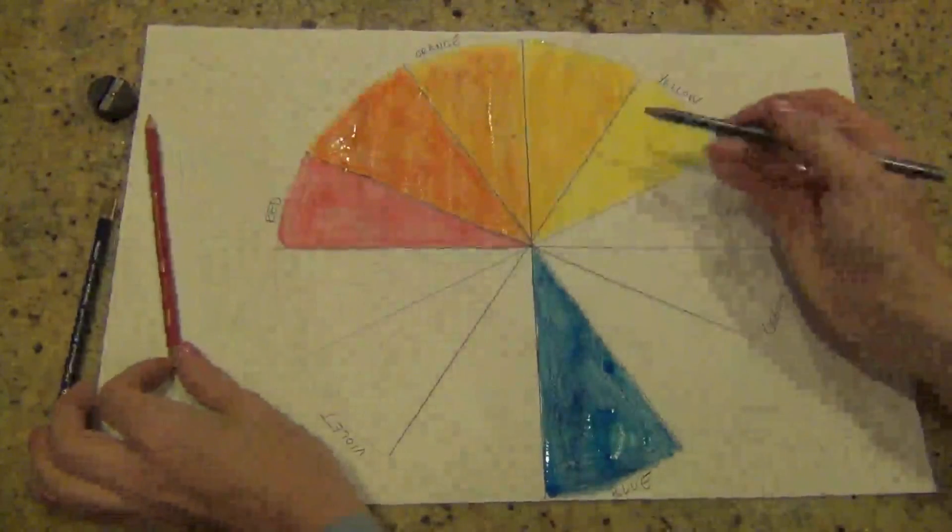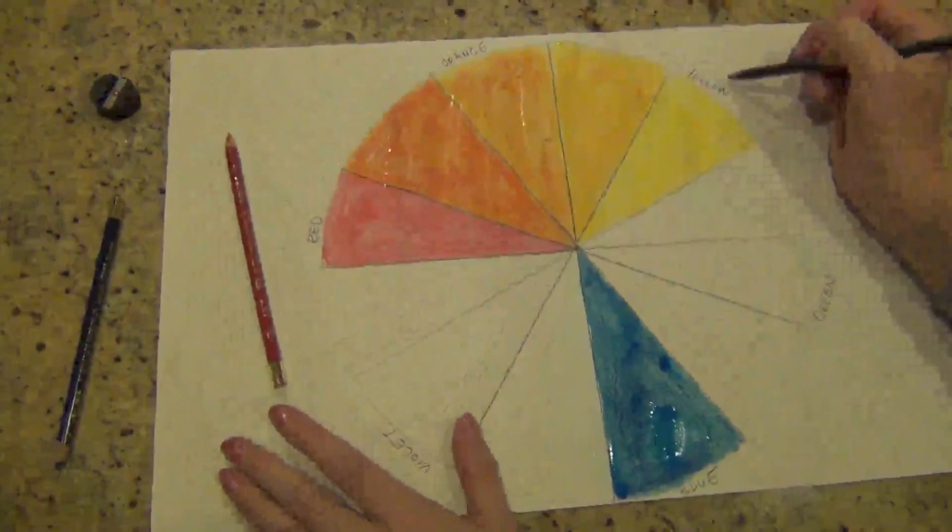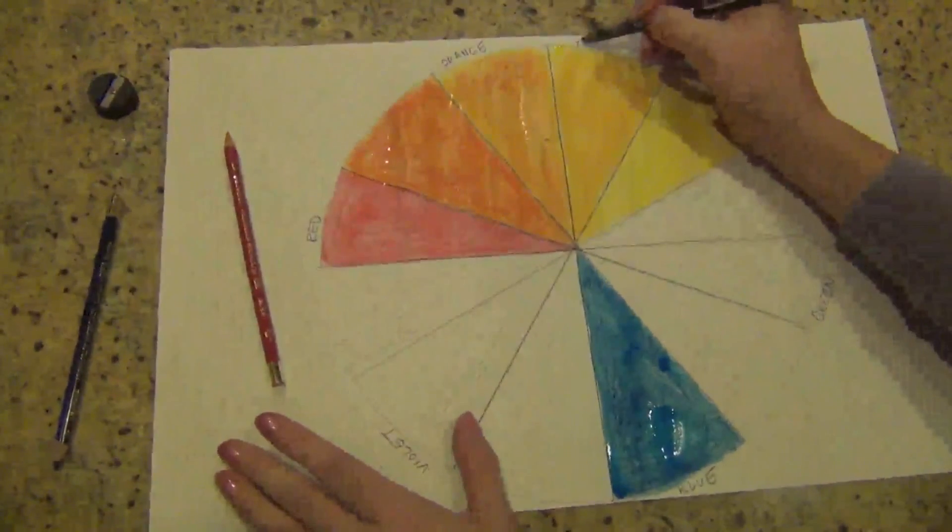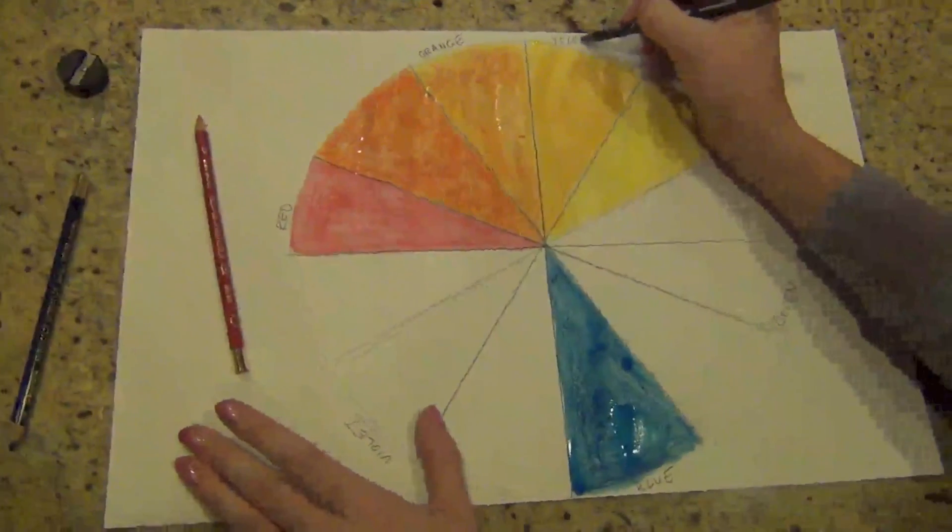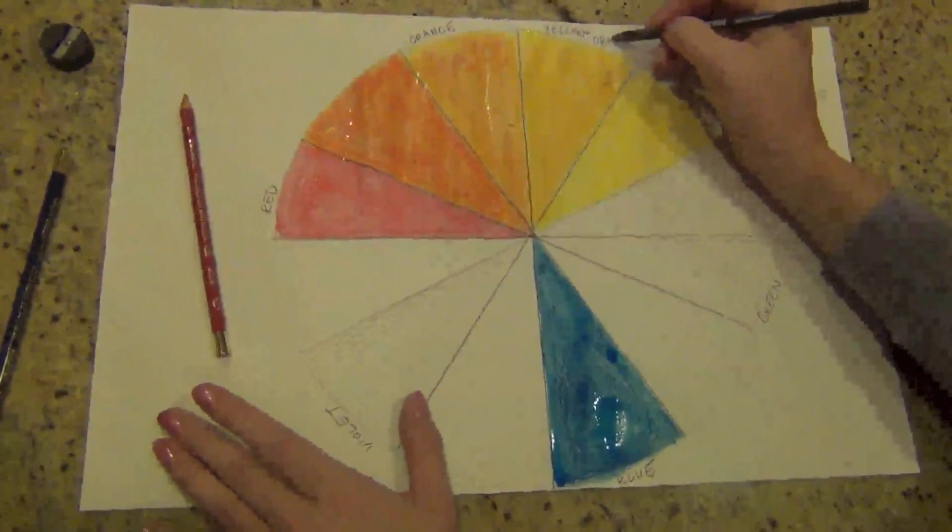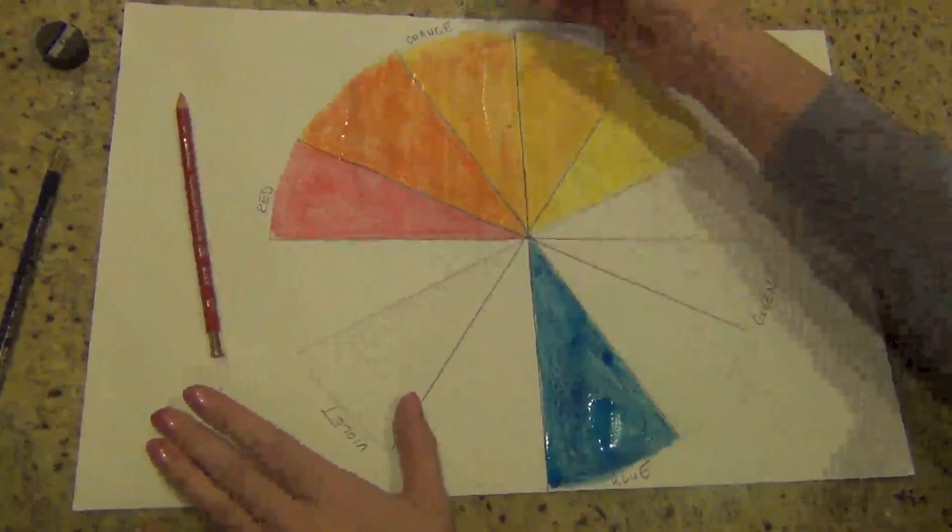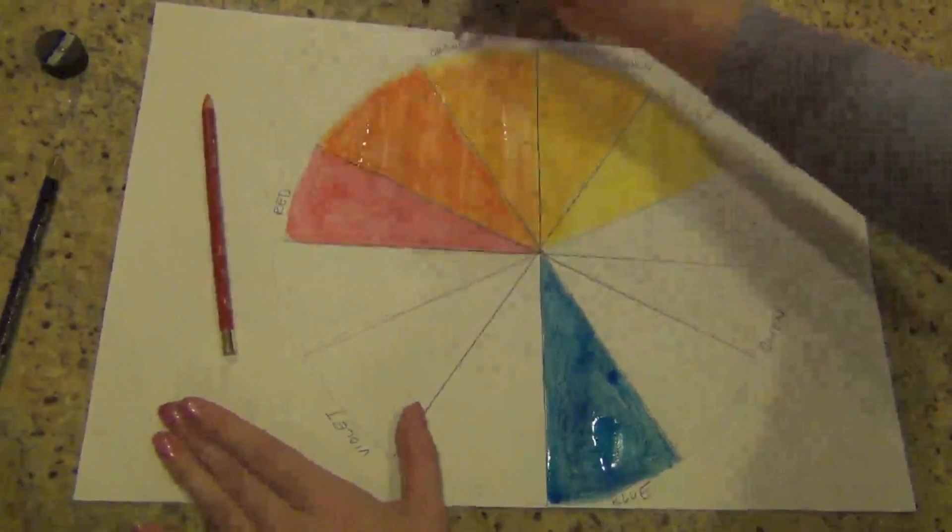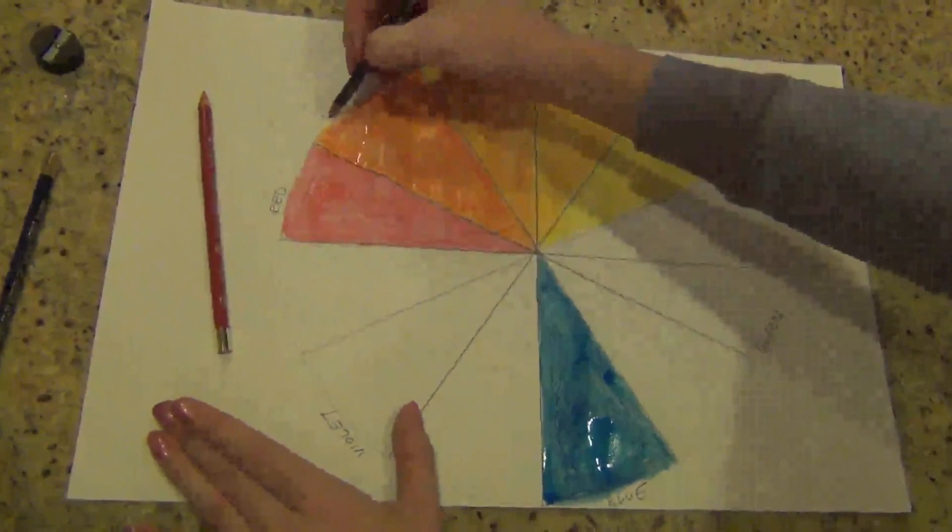But the way that you label these is really important. You always put the primary name first. So this is yellow and then orange. And then this one we're going to label red orange because you put the primary name first.